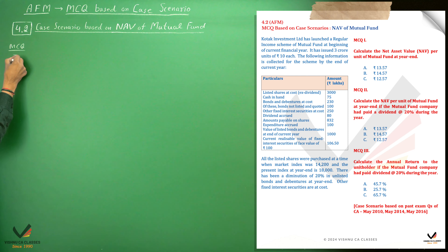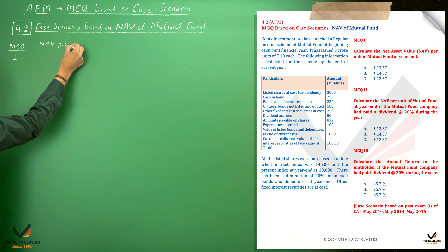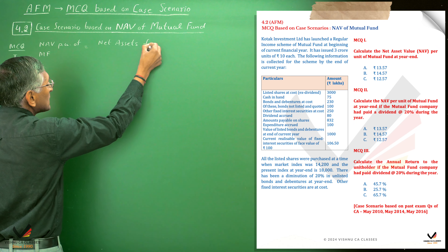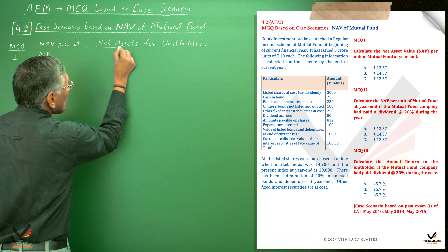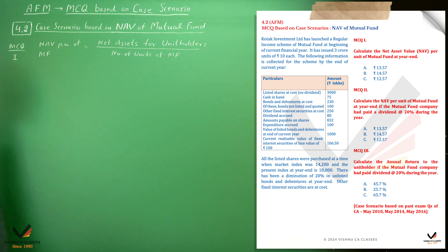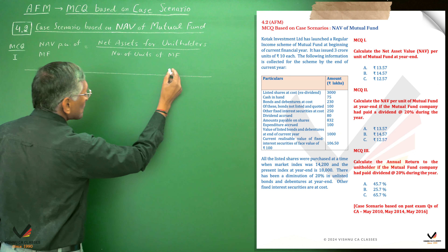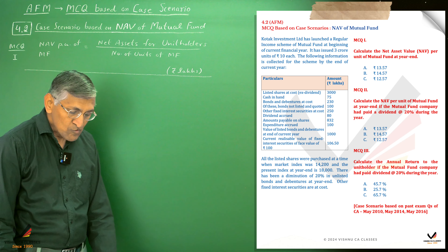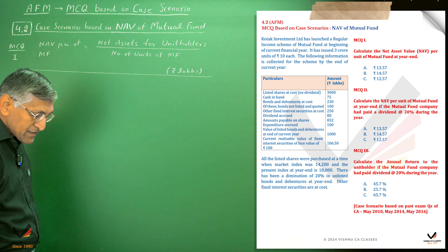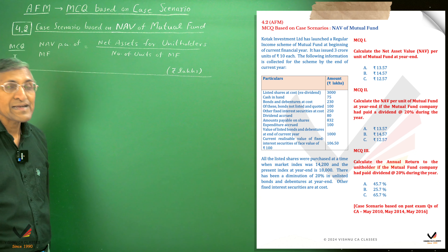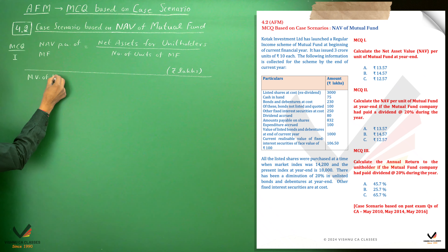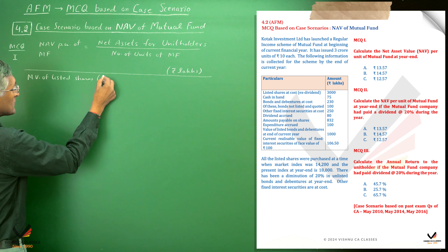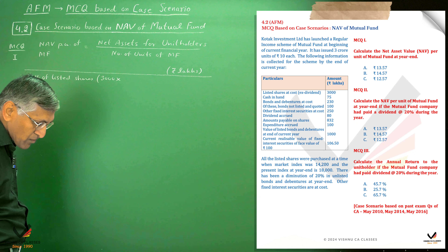For MCQ number 1, we have to calculate NAV per unit of mutual fund. NAV is the value available for unit holders divided by the number of units. First, we calculate the market value of listed shares. The cost value is 3,000 lakhs. The shares were purchased when the index was 14,200, but now the index is 18,000.